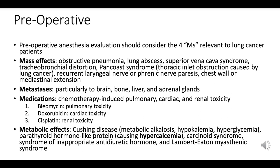Metastases to the brain, bone, liver, and adrenal glands can complicate the patient's overall condition, affecting neurological status, liver function, and hormonal balance. Understanding the extent of metastasis helps in anticipating possible complications and planning the anesthesia and surgical approach accordingly.